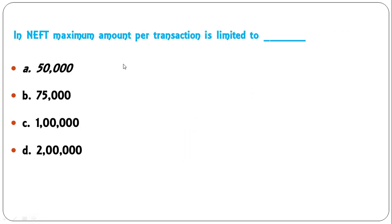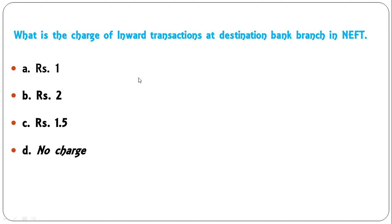In NEFT, the maximum amount per transaction for cash transactions between India and Nepal is limited to ₹50,000 — A is the correct answer. What is the charge for inward transactions at the destination bank branch in NEFT? The options are: ₹1, ₹2, ₹1.5, or no charge. For inward NEFT transactions there is no charge — D is the correct answer.